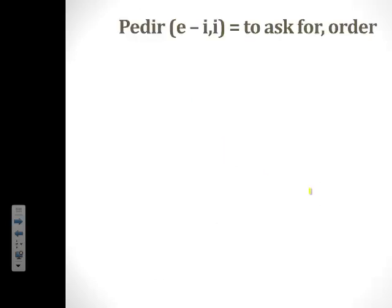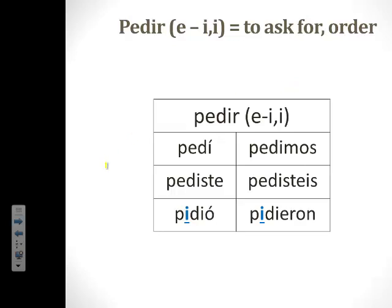Now let's look at a few more verbs from your list in section three. The first verb I want to look at is pedir. Pedir means to ask for or to order, and it's an E to I stem-changing verb. Here's its conjugation: pedí, pediste, pidió, pedimos, pedisteis, pidieron. You'll notice the stem change only occurs in the sole of the boot.